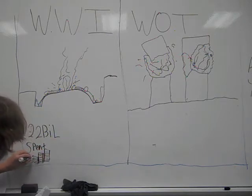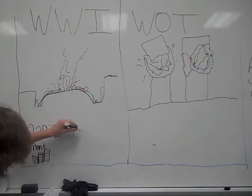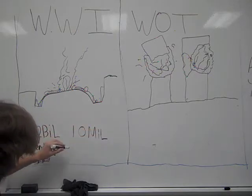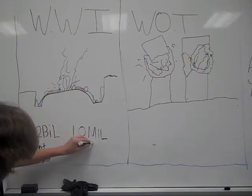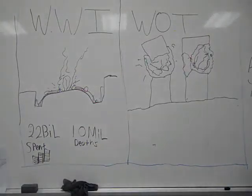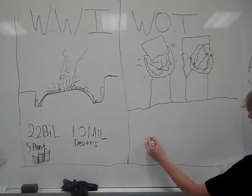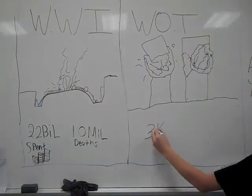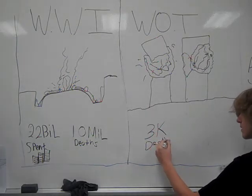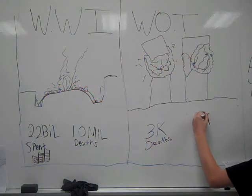In World War I, the U.S. spent $22 billion, and 10 million people died total. And while only 3,000 people died on 9-11, $1.1 trillion have been spent on the War on Terror.